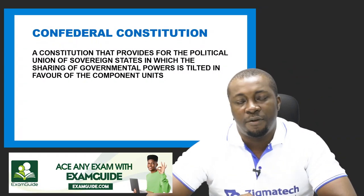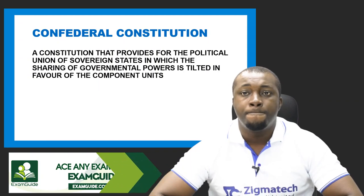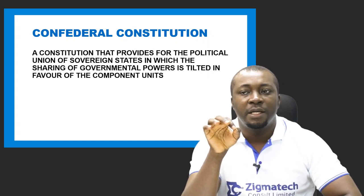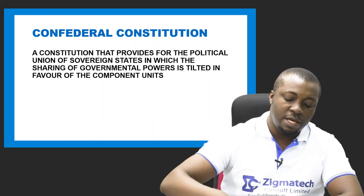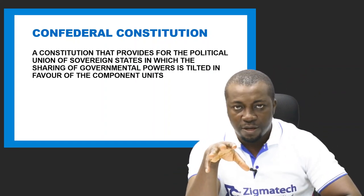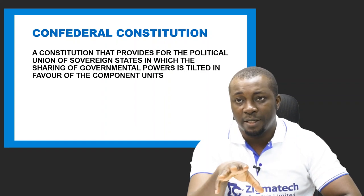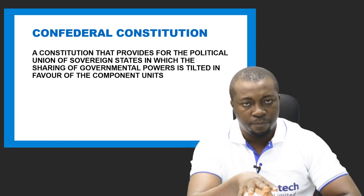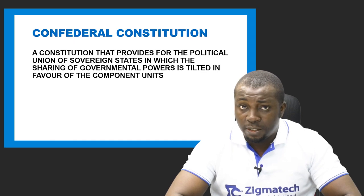The confederal constitution provides for a political union of sovereign states in which the sharing of governmental powers is tilted in favor of the component units. In a confederal state, it is a union of sovereign states where the component units retain their sovereignty and independence and can easily pull out of the union. A confederal constitution is unwritten and flexible in nature.